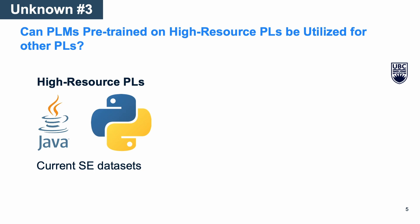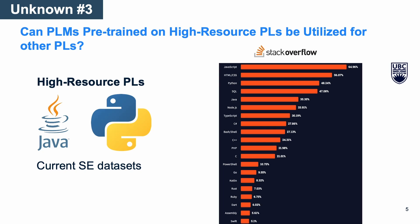The current datasets released for training PLMs on software engineering tasks are dominated by a few languages, mainly Java and Python, known as high-resource programming languages because there is a high volume of code written in them. In a recent survey conducted by Stack Overflow, we observed that although Java and Python are among the most popular languages, developers also reported using 36 other programming languages such as Ruby, Kotlin, and Scala. Thus, understanding if PLMs pre-trained on high-resource languages can be utilized for other programming languages is important.